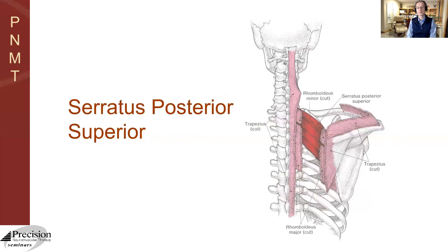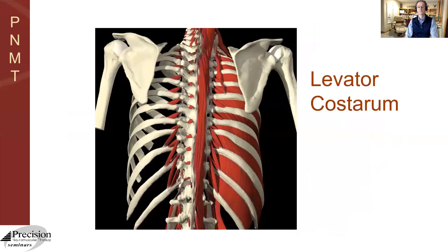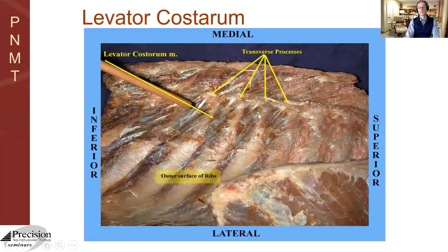The serratus posterior superior is very important in moving those upper thoracic ribs, especially in breathing and ancillary movements of the ribs during larger trunk movements. A little-known muscle that is very important symptomatically is the levator costarum — sometimes spelled with an A. Like the rotatory, you have a brevis and a longus. In the seminar, you'll see there are very interesting and important symptom presentations with that muscle. These are the levator costarum muscles, lateral to the transverse process and to the rib below.